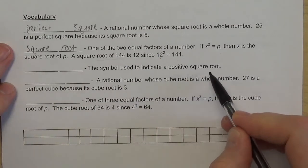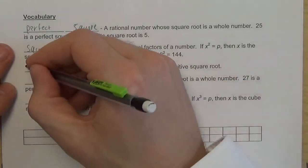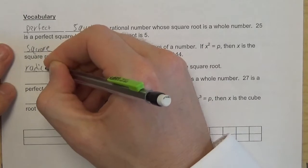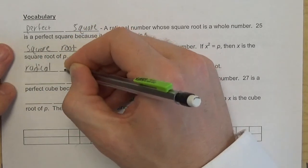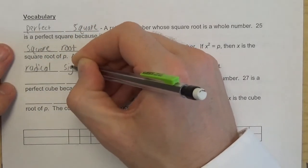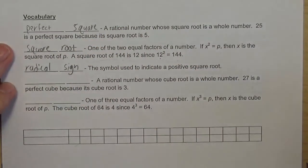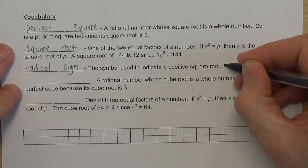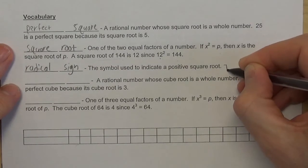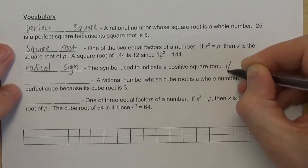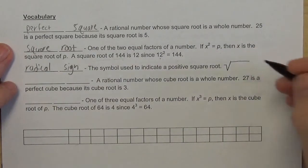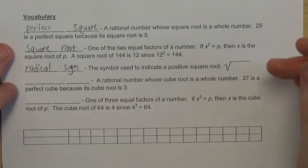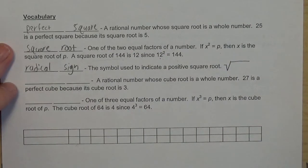The symbol used to indicate a positive square root is called a radical sign. Draw this with me — a radical sign has a little lip on it. It goes diagonal down, diagonal up higher than it was before, and then straight across. You can put a number inside there, and that means we're looking for the positive square root of that number.